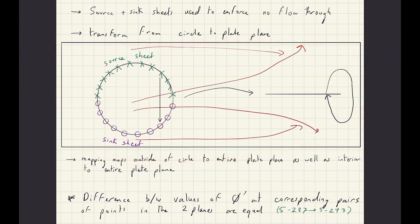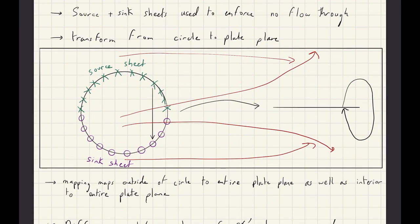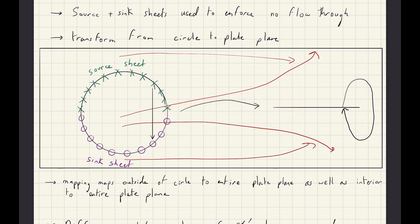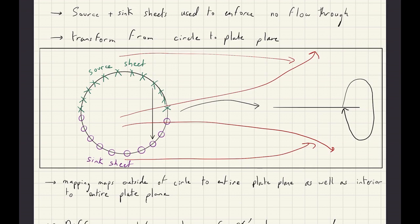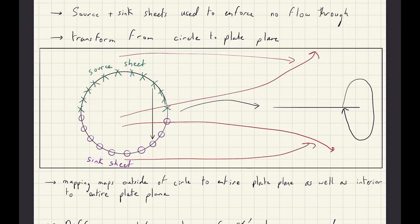This schematic shows what it's like to transform the circle plane to the plate plane, which I discussed in depth in the last lecture. Through the conformal mapping transformation, you map the circle to the upper and lower surface of the flat plate. Anything outside the circle is mapped to the outside of the plate, and anything inside the circle is also mapped to points outside of the plate, as you can verify by plugging numbers into the circle-to-plate transformation.